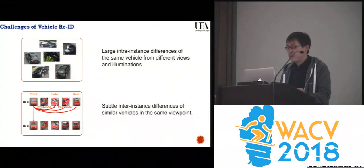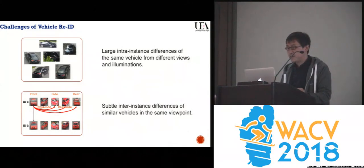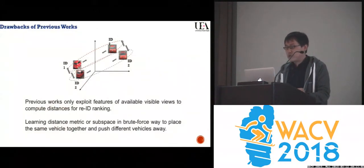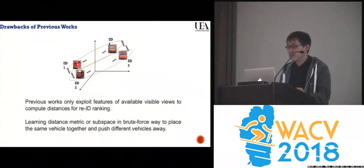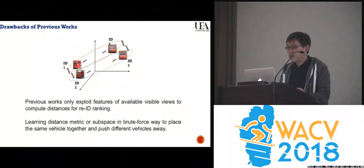The second problem is that you can always find many very similar vehicles on a road, having the same color and type. Previous works have drawbacks: they usually use features of the visible views to compute distances directly for re-ID ranking, or use features in different viewpoint spaces to learn distance metrics or subspaces in a brute-force way.